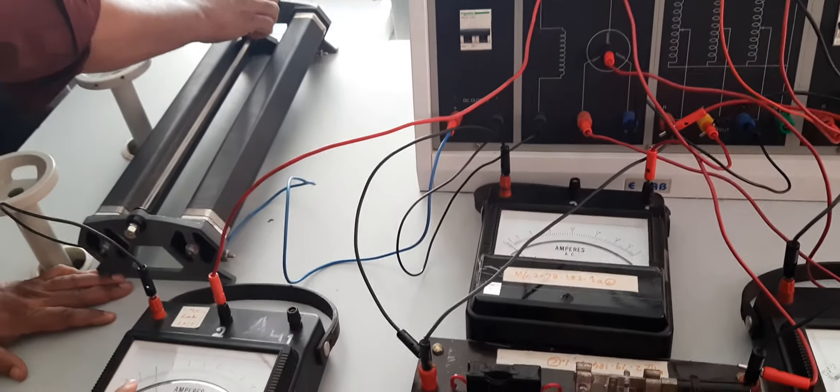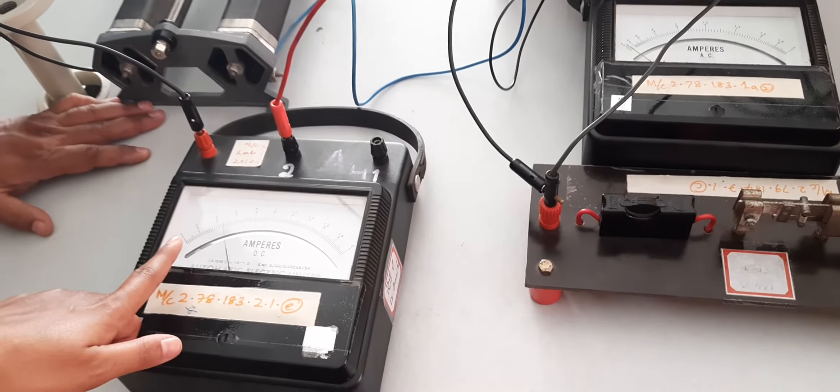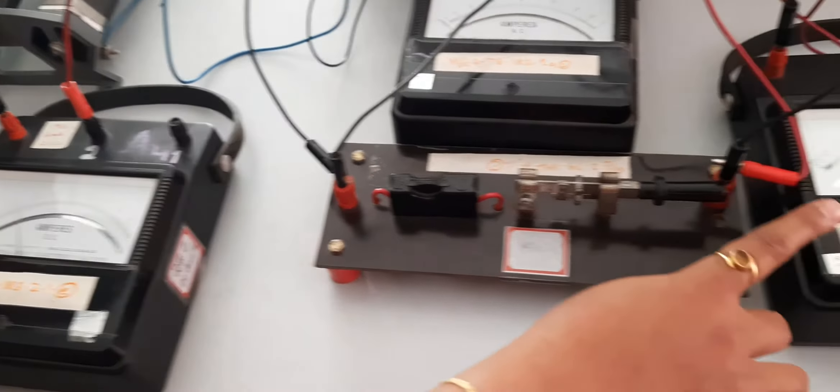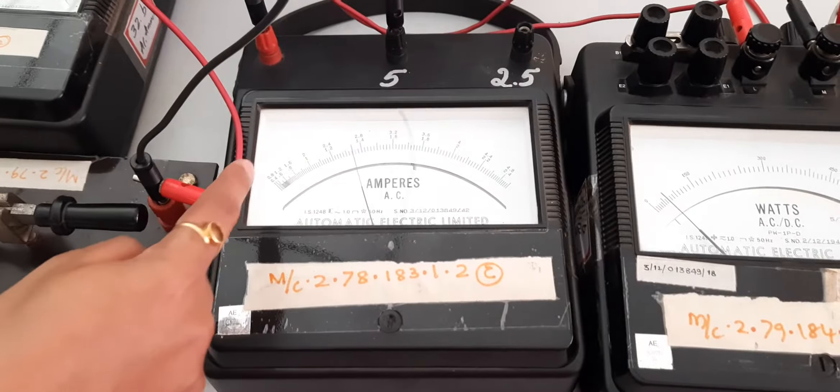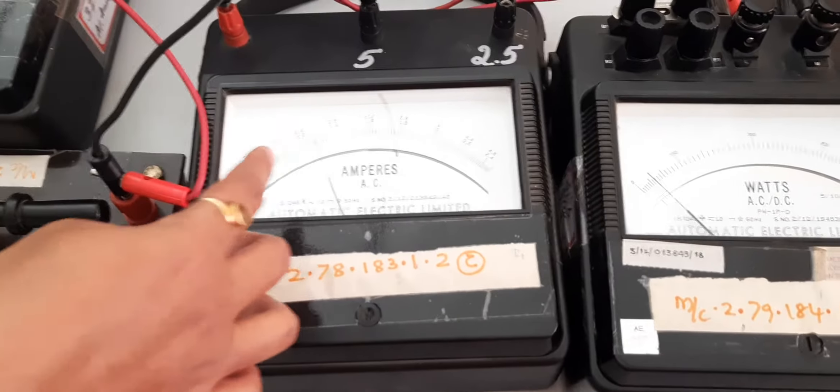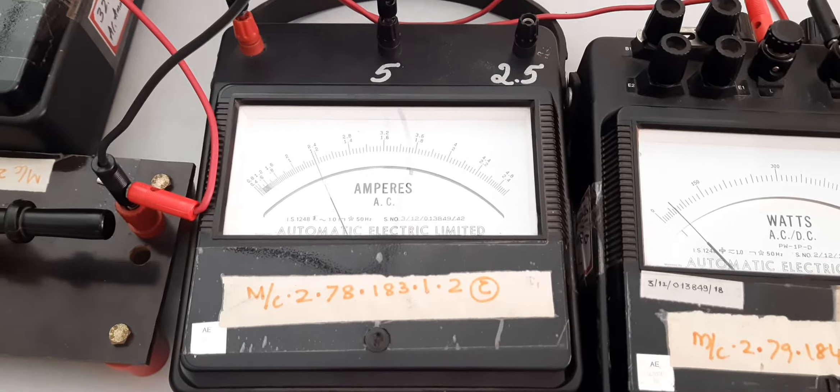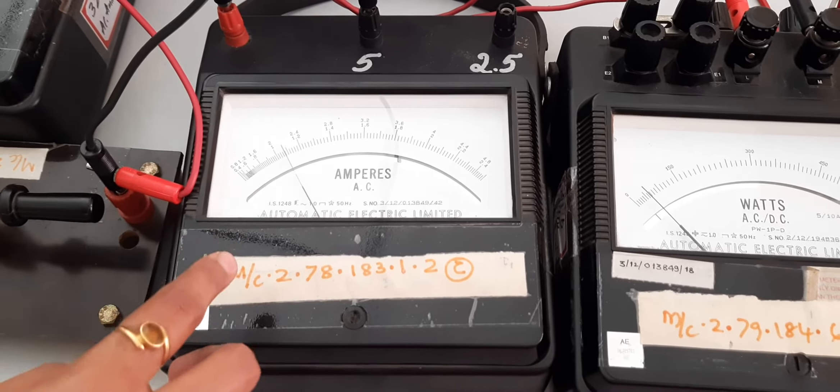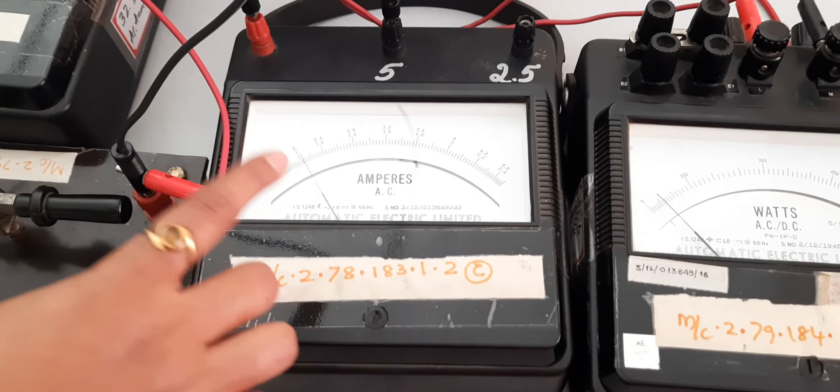Now the RF has been varied. We can see that the field current is increasing and the corresponding armature current is decreasing. So instead we have to take the reading. So by decreasing the RS value, we are decreasing the armature current.